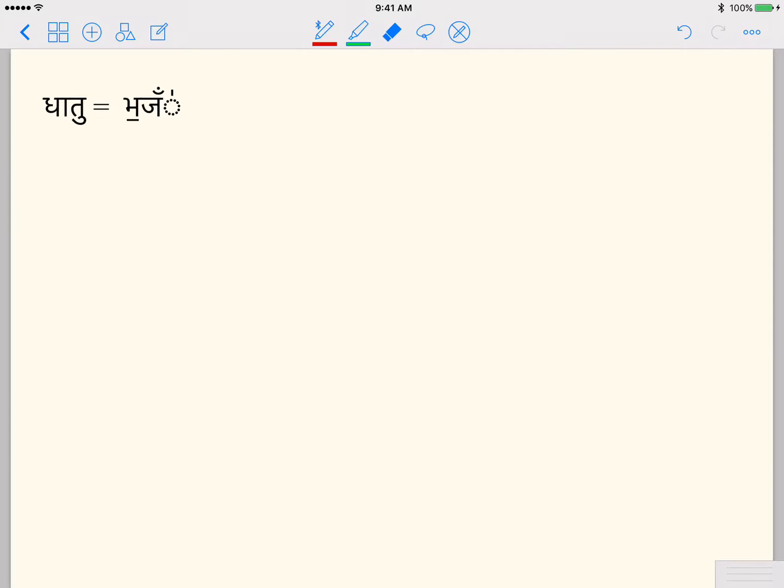I want to give a brief overview of how dhatu path is arranged and how to look at a dhatu and identify certain properties that are very useful with respect to word derivation.